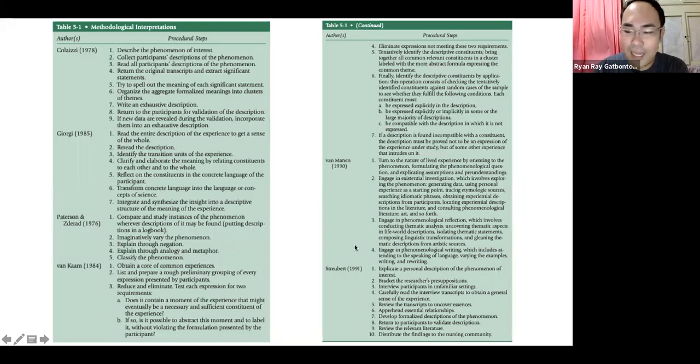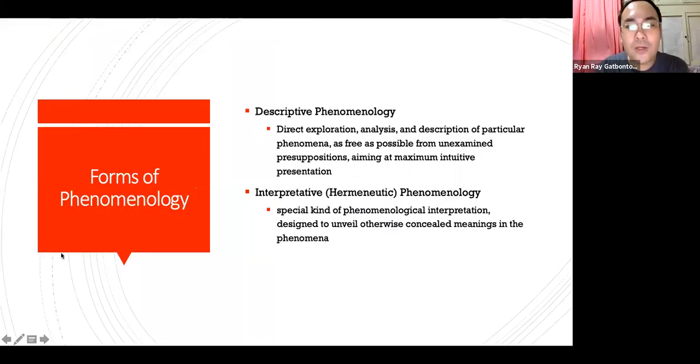So let's proceed to the next slide, which is the forms of phenomenology. There are two major forms of phenomenology. Actually there are six, but primarily there are two that we want to tackle in this class, which is descriptive phenomenology. This involves direct exploration, analysis, and description of particular phenomenon, as free as possible from unexamined presuppositions, aiming to maximum intuitive presentation. You don't interpret in descriptive phenomenology. You're just there to describe the phenomenon and try to find a united meaning for all. In this type of phenomenology, you do not interpret.